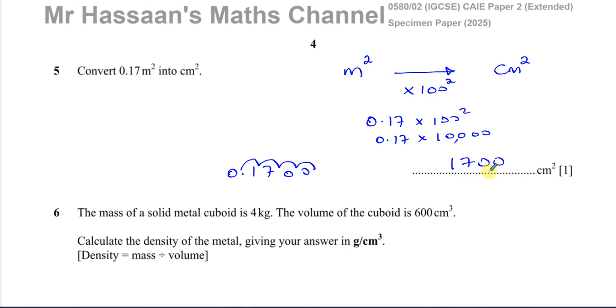So again, this is a non-calculator paper. In the past you would just take 0.17 and you would multiply it by 100 squared in your calculator and you get your answer. But now we have to know how to deal with this type of question without using a calculator. Now, some people will ask, why do we multiply by 100 squared?